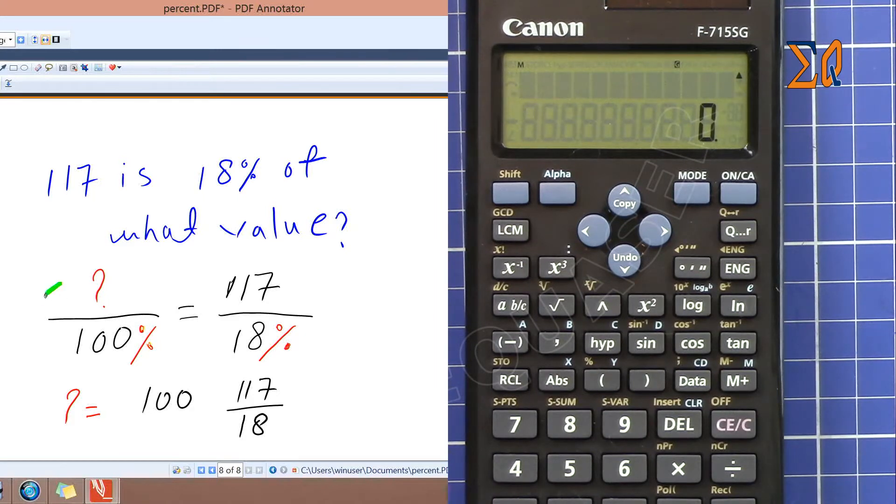So because we don't know the actual value and that is 100 percent, we write it like that. And 117 with the percent together. Now we do cross multiplication, so 100 multiply by 117 divided by that, so 100 and then the flip of the other side.